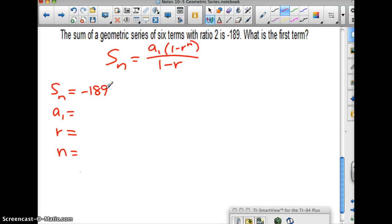I'm going to add something here because these are all the things that could be unknowns: s sub n, a1, r and n. The reason I added s sub n to this is because, well, I know what that is. It's negative 189. And they tell me it's a geometric series of 6 terms. So n is 6. So right now I have two things that are unknown. I know it says it has a ratio of 2, so I have r is 2.